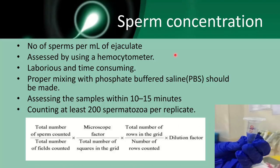So how do we assess sperm concentration? By the help of a hemocytometer. Though it is laborious and time consuming, this is usually done in most laboratories. We mix the semen with the semen diluting fluid — the phosphate buffered saline — and we assess the sample, trying to count at least 200 spermatozoa.